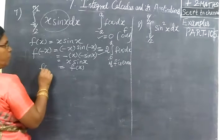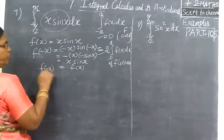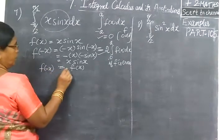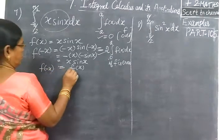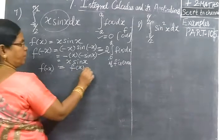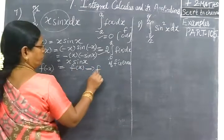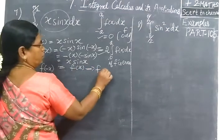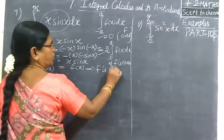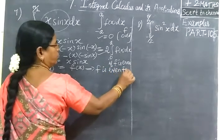So f(minus x) equals f(x), which implies f is even. That is an even function.